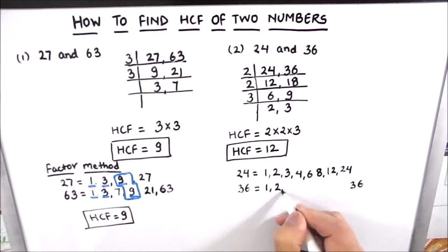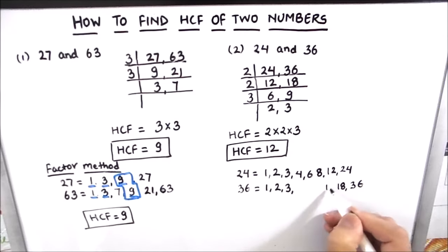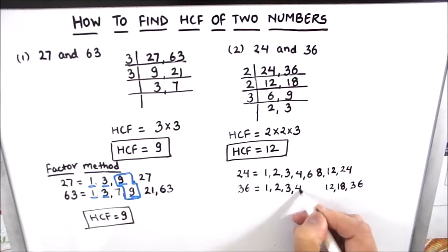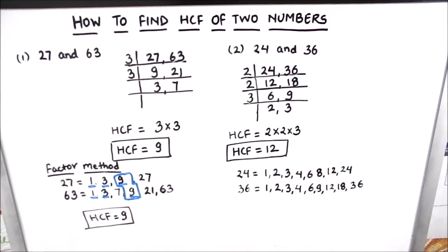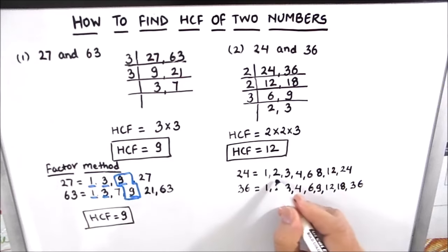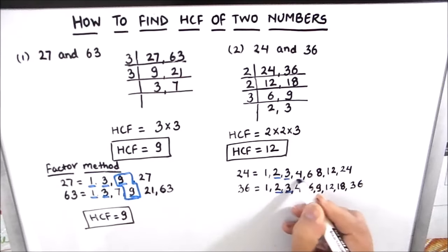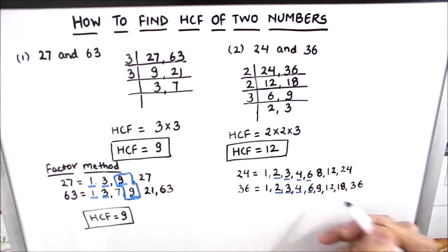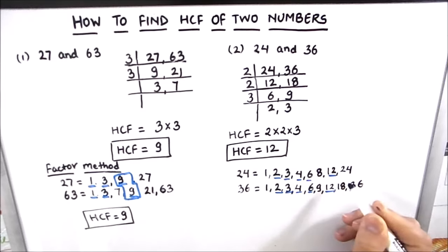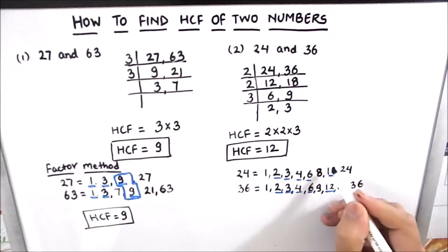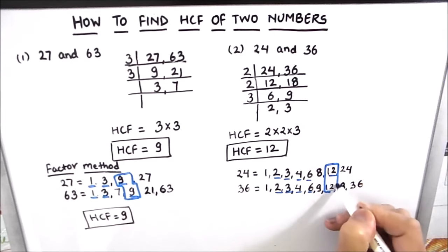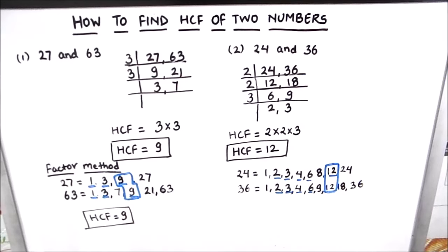We have written all the factors of 36. Among these factors, there are many common factors between the two numbers: 2, 3, 4, 6, and 12. But the highest common factor is 12. So the HCF of 24 and 36 is 12.